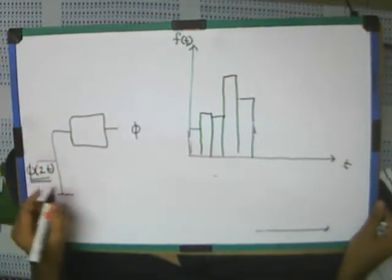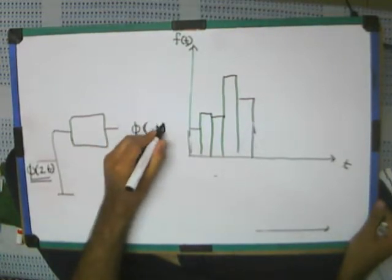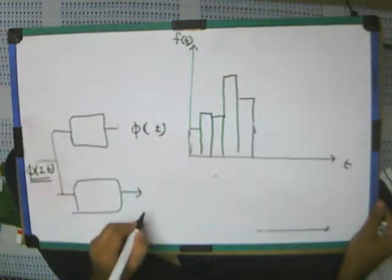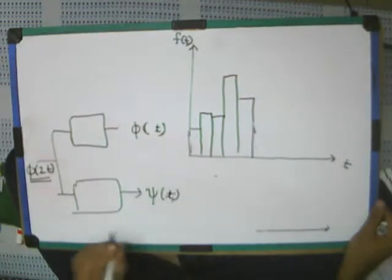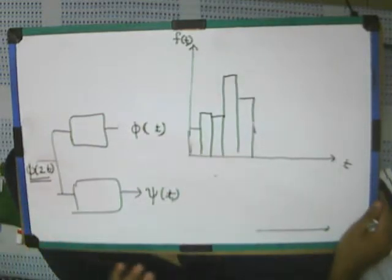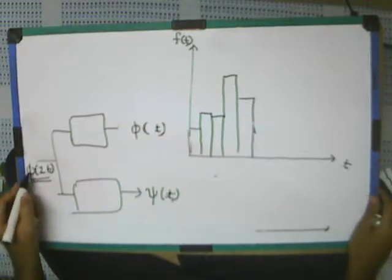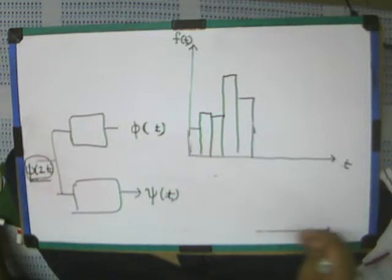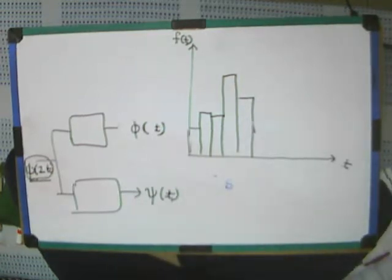Then here the signal will be reconstructed by phi of T. Because it is decimated and done like this. And here the signal on the wavelet side will be reconstructed by phi of T. Are you getting what I am trying to say? So, by this we get, how can I think of this signal. Think that a signal is reconstructed by phi of 2 T.